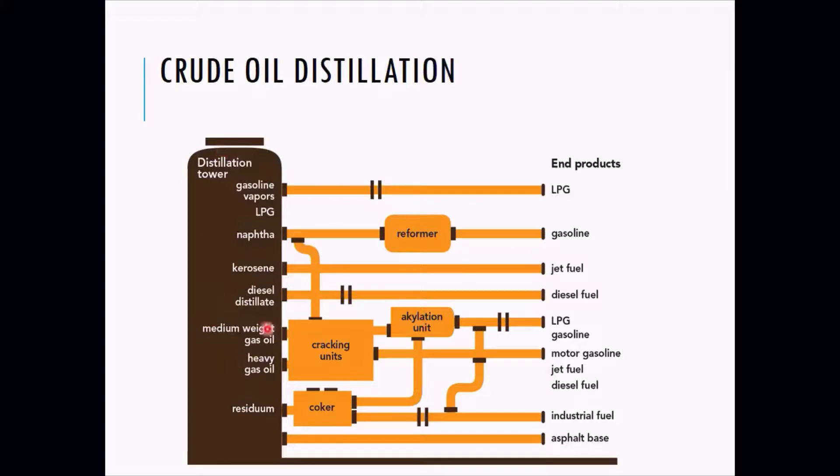From the coker you get the industrial fuel and asphalt. From the cracking units, you get gas oil and heavy gas oil, and these are still cracked. They are subjected to some catalyst, and after that you get motor gasoline, jet fuel, and diesel fuel.